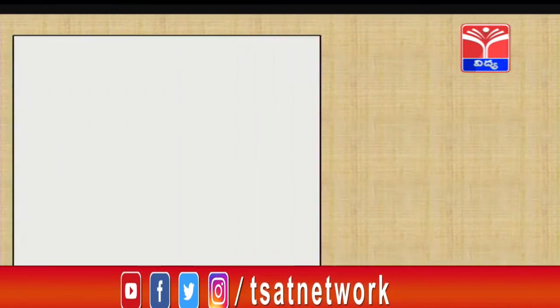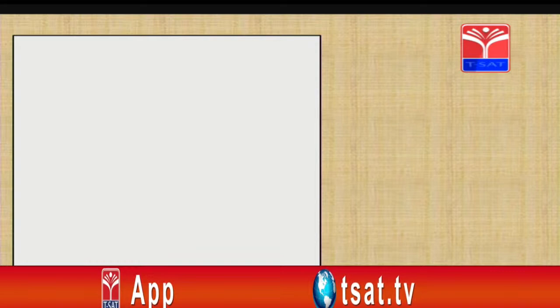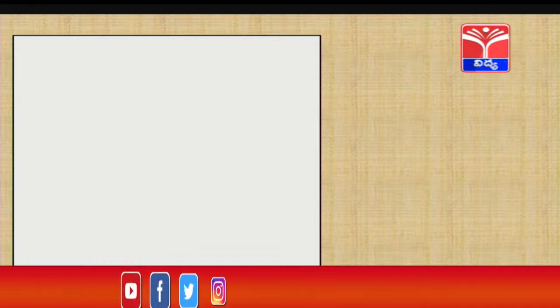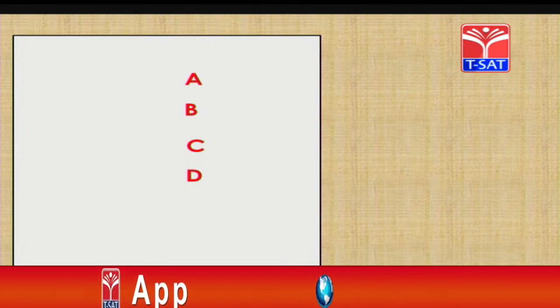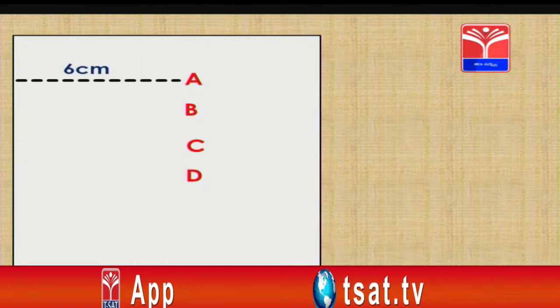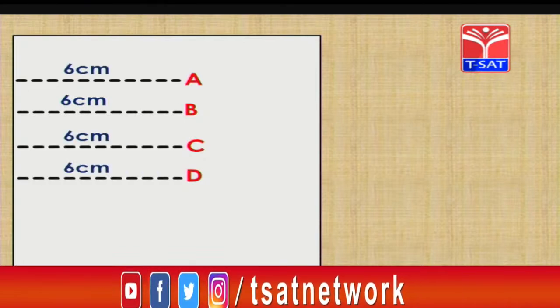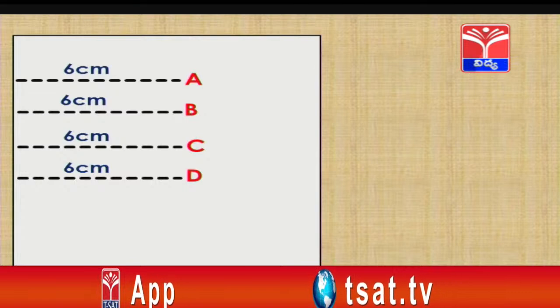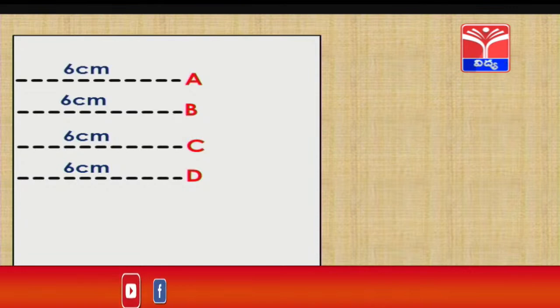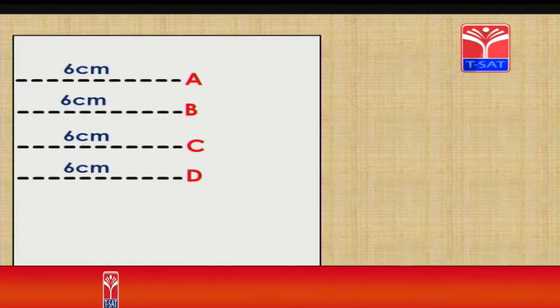Let us do a small activity. Take a paper and mark a point. The hint is: the point should be at a distance of 6 centimeters from the left edge. Many students mark the point as shown in the figure. All these points - A, B, C and D - are correct because each is at a distance of 6 centimeters from the left edge. To fix the exact position of a point, more information is needed - another reference such as the distance from the top or bottom edge must be given.